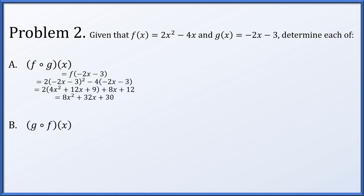Next, g of f of x: we take f of x, which is 2x squared minus 4x, and plug it into g. We multiply by negative 2 and subtract 3, giving us negative 4x squared plus 8x minus 3. It's worth noting that f of g of x is 8x squared plus 32x plus 30, whereas g of f of x is negative 4x squared plus 8x minus 3 — they are not the same. The order of composition generally matters.